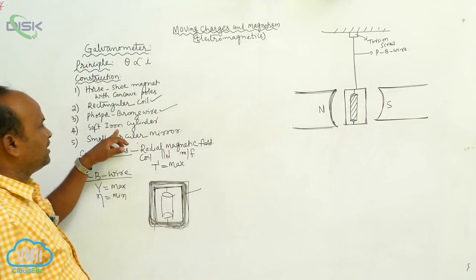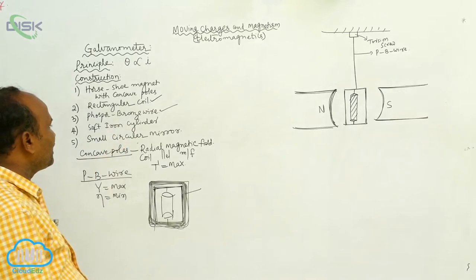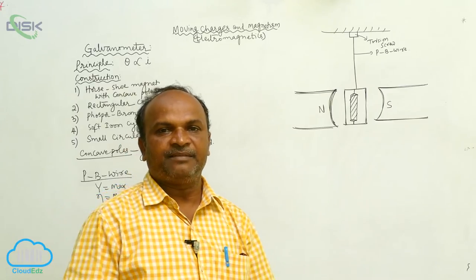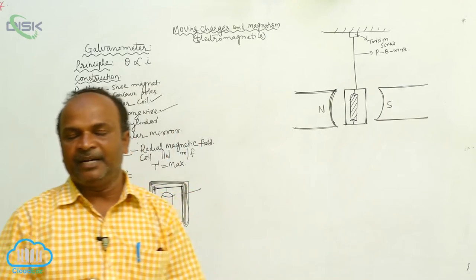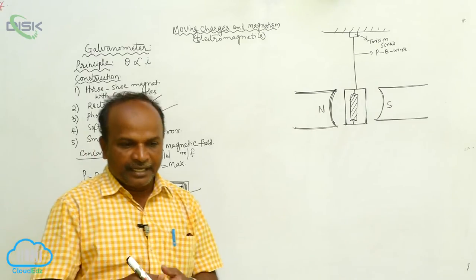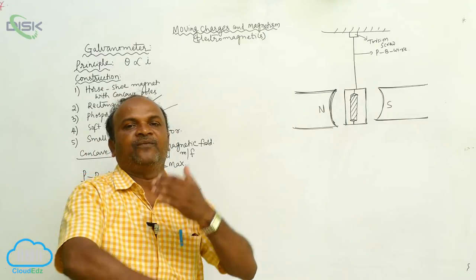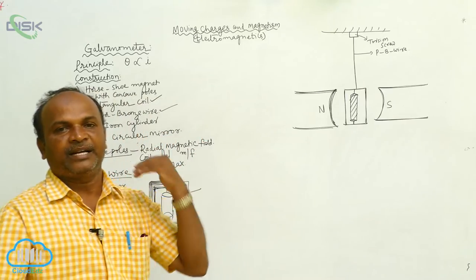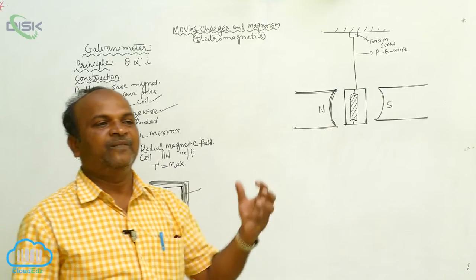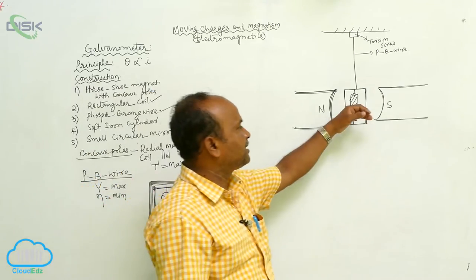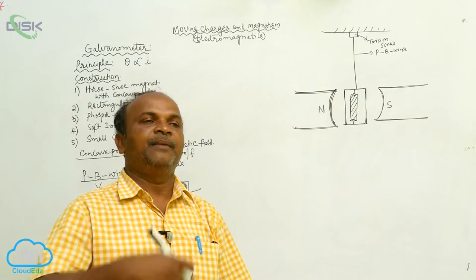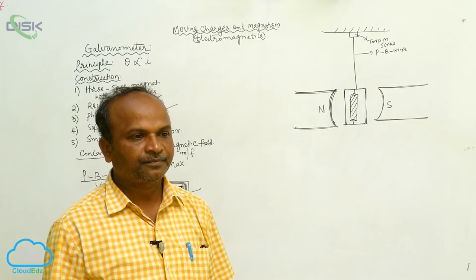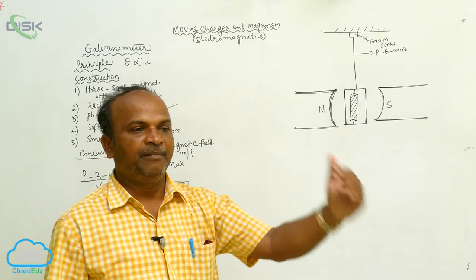We use the soft iron cylinder because its magnetic permeability is maximum. As its permeability is maximum, it will allow more number of magnetic flux lines through it. As it allows more magnetic flux, the magnetic field induction at the center of the coil becomes maximum, and therefore the coil will experience maximum torque.